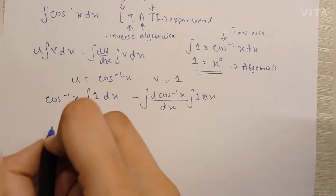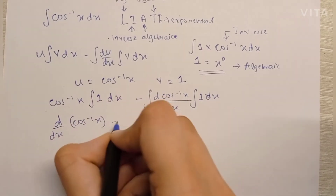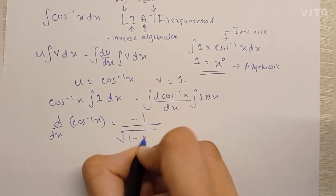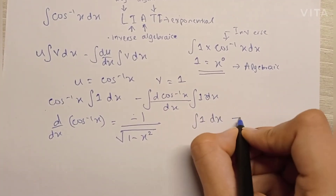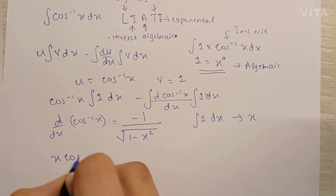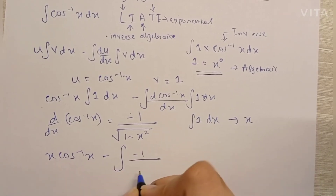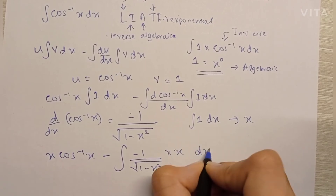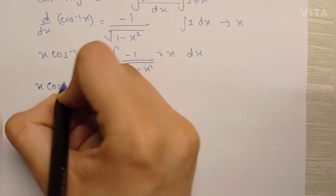Now we know that the differentiation of cos inverse x is minus 1 upon root of 1 minus x squared, and the integration of 1 with respect to x is x itself. So we can write this as: x cos inverse x minus the integral of minus 1 upon root of 1 minus x squared, into x dx.